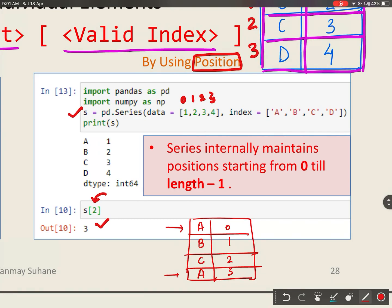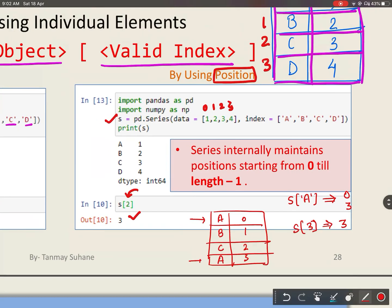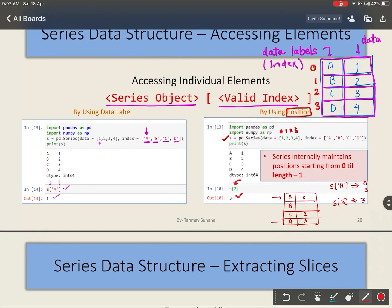If you use data labels to extract the data, it will give both the data. I hope it is clear to you why we use position to extract the data and why we use data labels to extract the data.